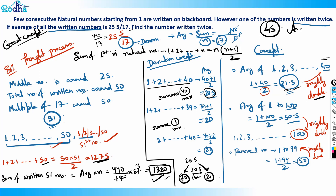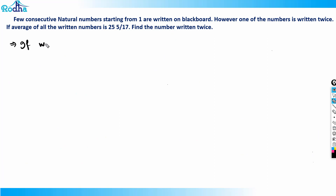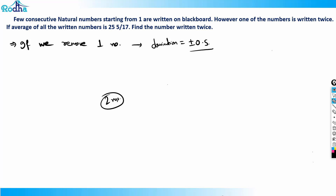This deviation of ±0.5 is true for any such set. If the original average is 20.5, removing the maximum decreases it at most to 20, and removing the minimum increases it at most to 21. So if we remove one number, the deviation is ±0.5. I'll discuss this concept further with another great question in the next video.